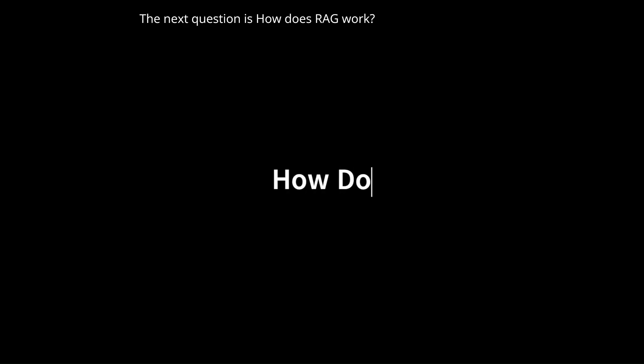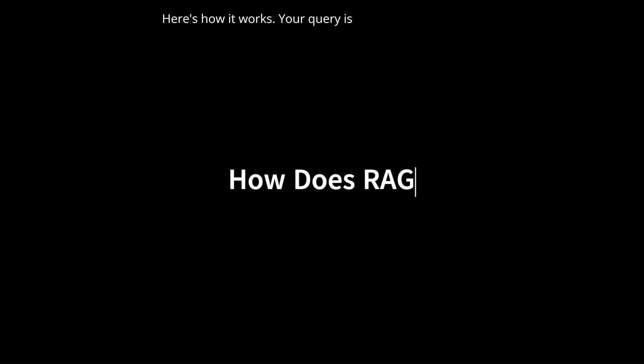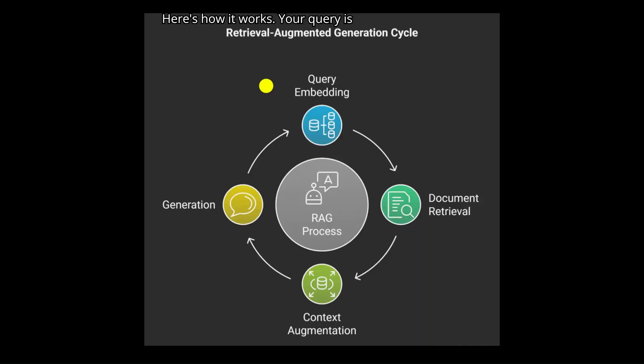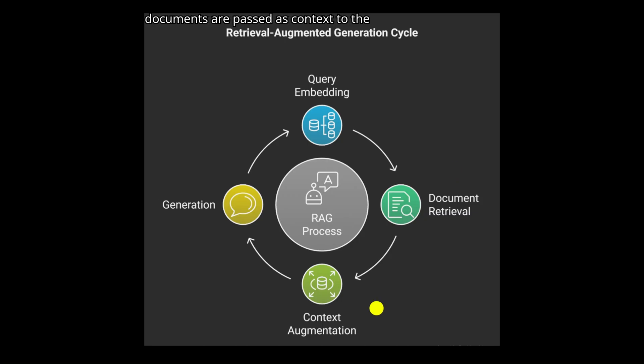The next question is: how does RAG work? Here's how it works. Your query is first embedded, then relevant documents are retrieved based on similarity. These documents are passed as context to the Generator, which then produces a factually enriched answer.